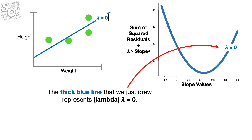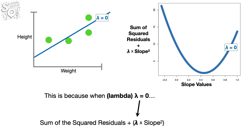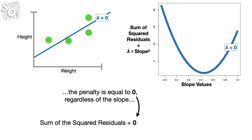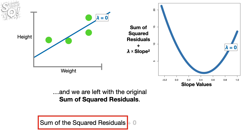The thick blue line that we just drew represents lambda equals 0. This is because when lambda equals 0, the penalty is equal to 0 regardless of the slope, and we are left with the original sum of squared residuals.